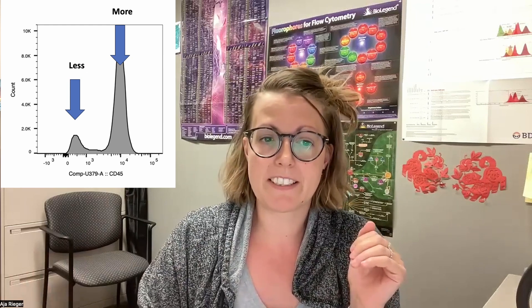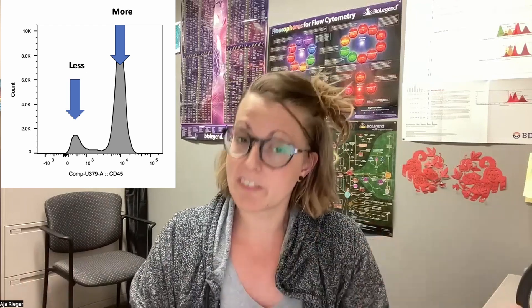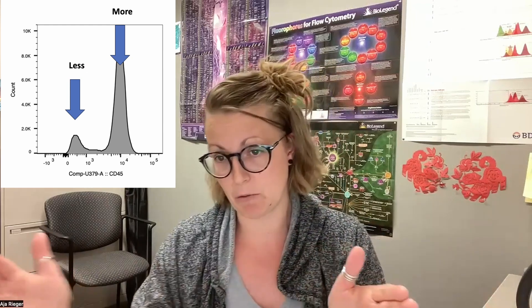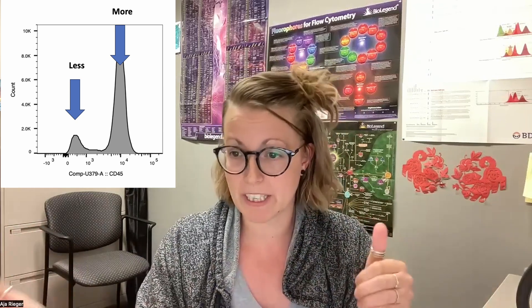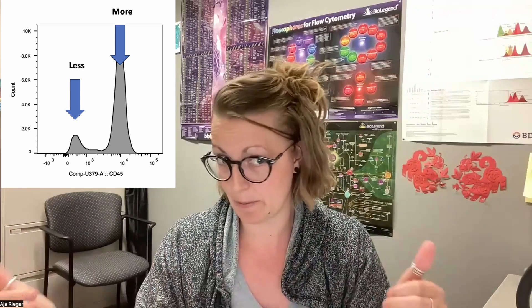Now when we think about these histograms, it's really just looking at the fluorescence expression over a relative scaling. So events down at the left side will have less fluorescence. Events moving further right will have more fluorescence. So as the scale numbers increase, you have more fluorescence in that sample.